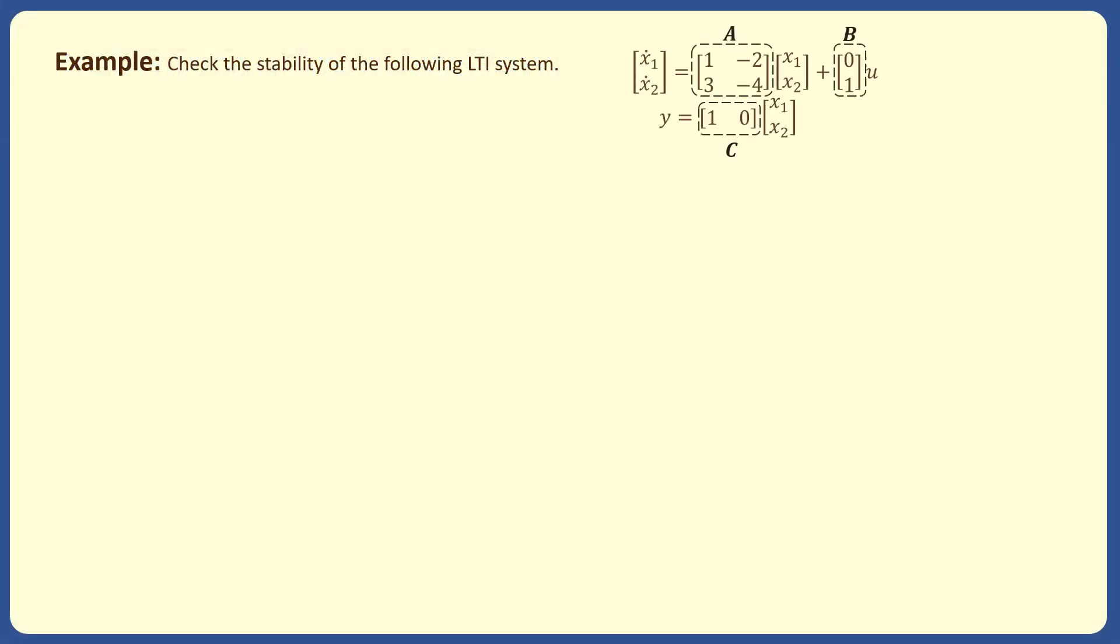As an example, consider a linear system in this form. Note that among matrices A, B, and C in the state space model, only the matrix A is important to determine the stability of the system.